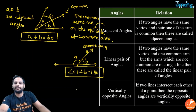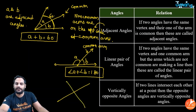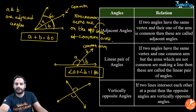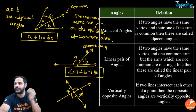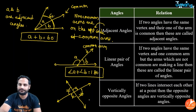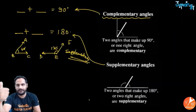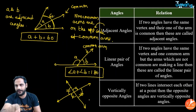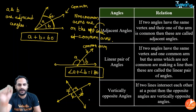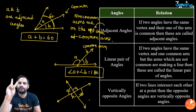Vertically opposite angles: when two lines intersect each other, four angles are formed. The vertically opposite angles are equal — this angle equals that angle, and the other pair are also equal. This property holds only for intersecting lines. When lines intersect you get this 'X' formation.